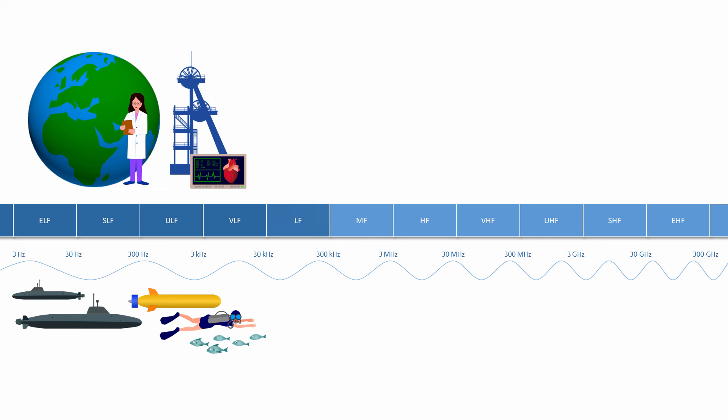The low frequency band lies between 30 and 300 kHz. This is used by amateur radio operators, aircraft beacons and to synchronize clocks. The low frequency band lends itself to long distance communication because signals at these particular wavelengths can diffract around obstacles and follow the curve of the earth. Frequencies in the LF band are often called ground waves.